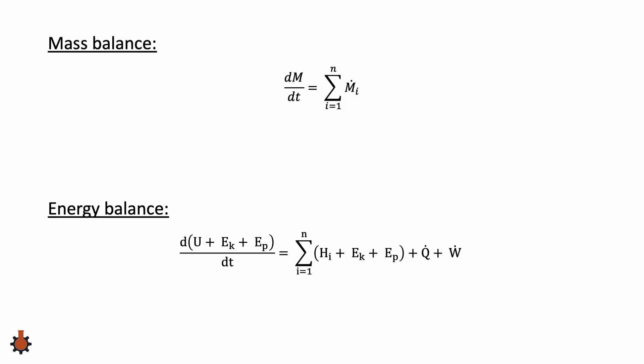Two examples of how you would use steady state definition are the mass balance and the energy balance. Both of these equations have a d/dt term in them. The mass balance has a mass term, while the energy balance has terms for internal energy, kinetic energy, and potential energy in the numerator. If the systems are at steady state, these terms would reduce to zero.